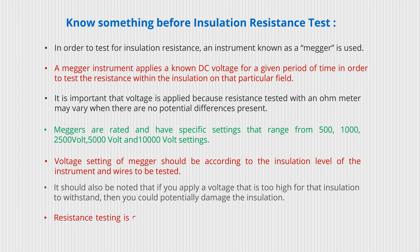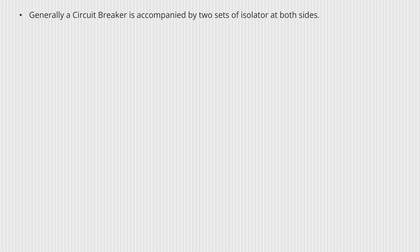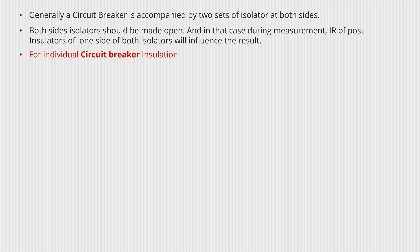Insulation resistance testing is crucial for verifying that the insulating materials which make up the breakers are performing correctly. Generally a circuit breaker is accompanied by two sets of isolators on both sides. Both side isolators should be made open, and in that case during measurement, the IR of post insulators of one side of both isolators will influence the result for individual circuit breaker insulation resistance testing.